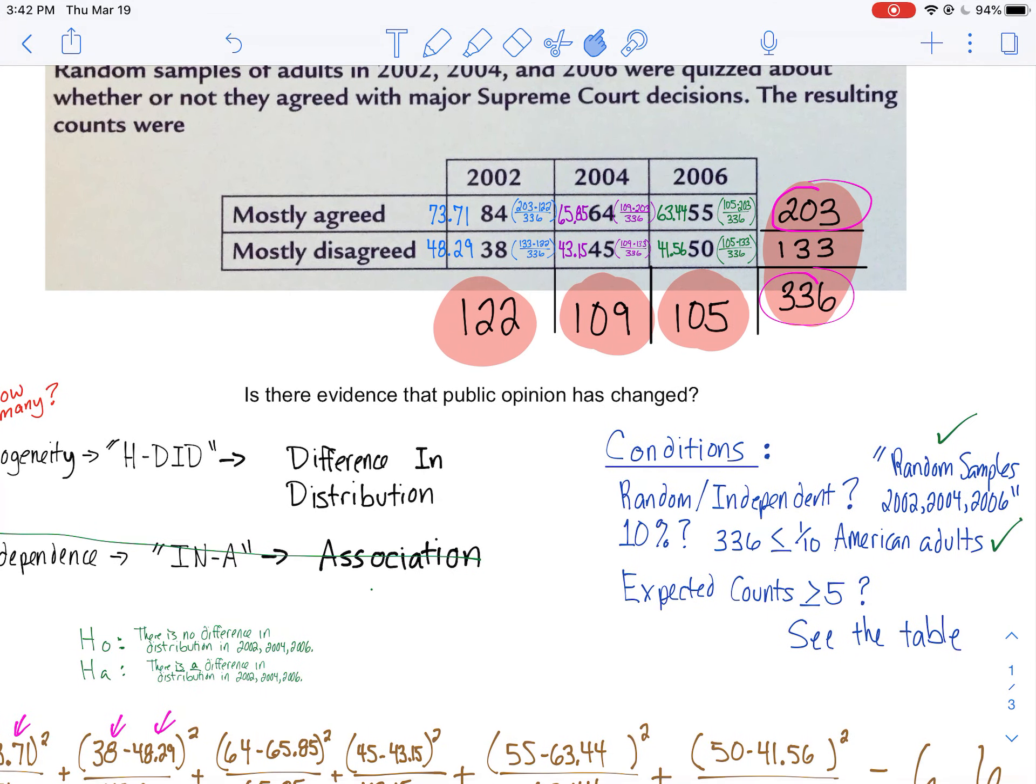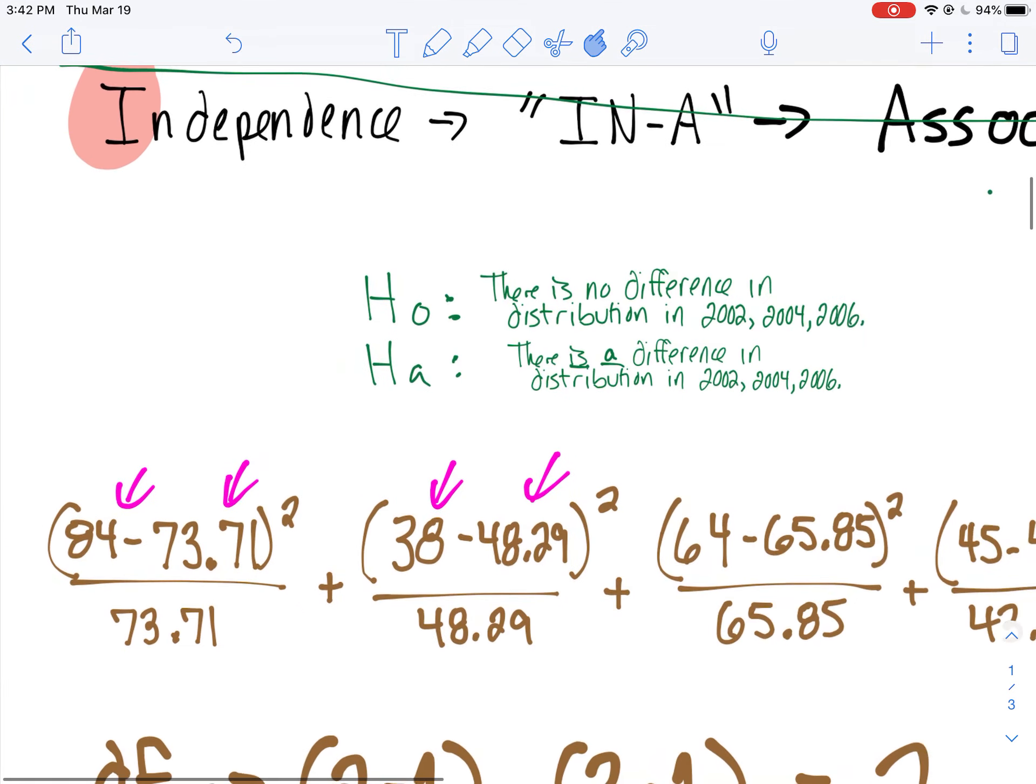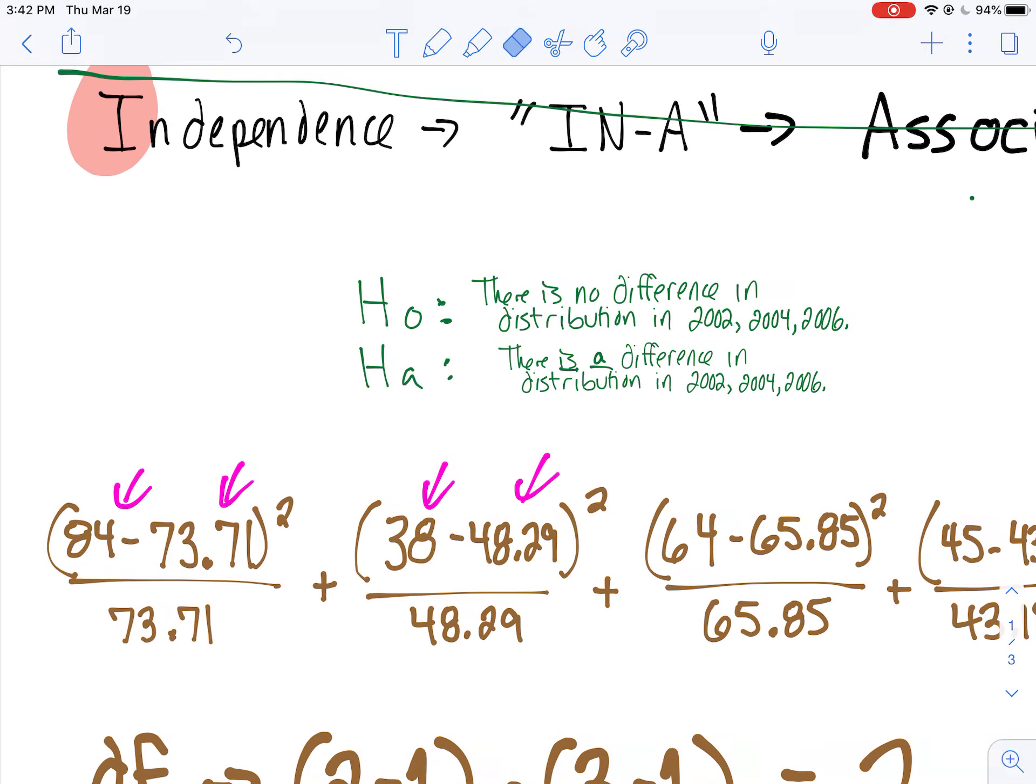Now, the way I set this up, I did this the long way. I set this up using the formula. Luckily, we have a TI calculator. You can enter these values into a matrix, and then it will do the chi-square test for you. However, it's good to know what these formulas look like. Chances are, in an AP exam, you'll see this asked in formula form.